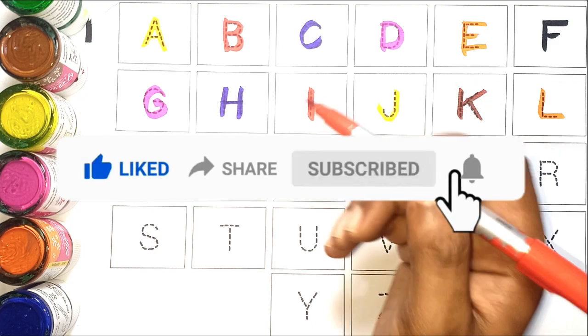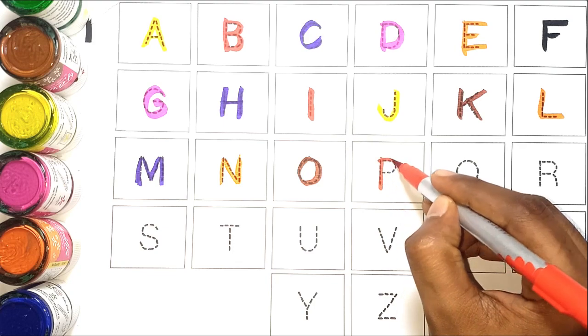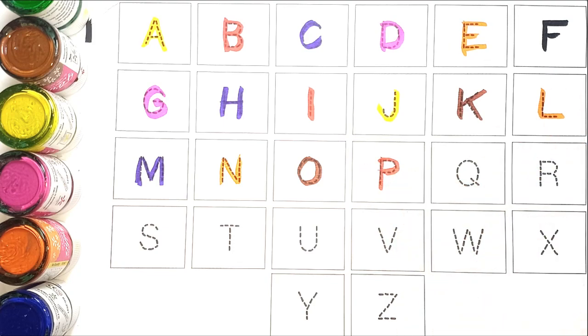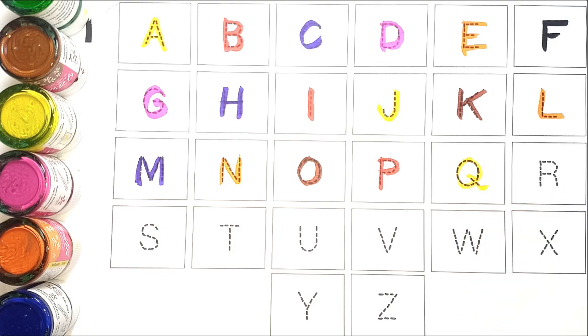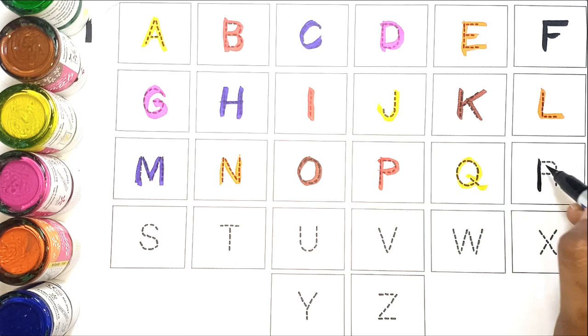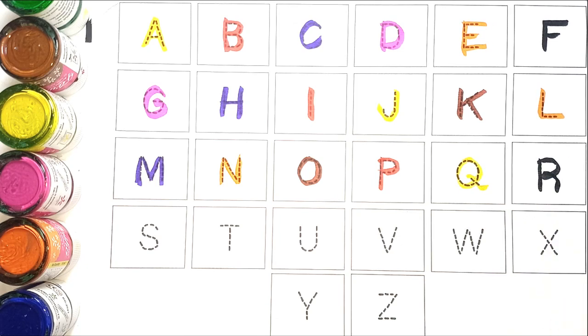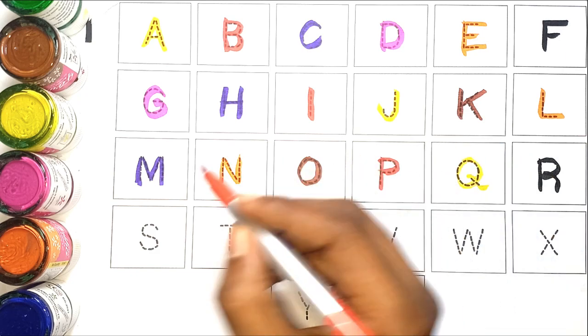Red color P, P for pen. Yellow color Q, Q for queen. Black color R, R for rabbit.